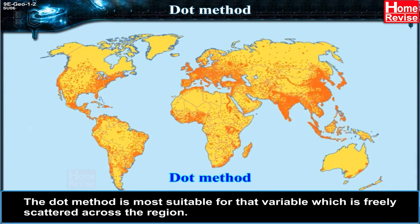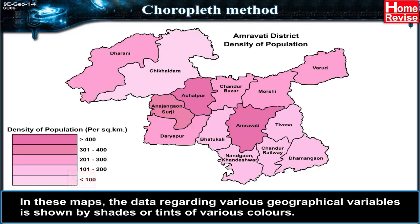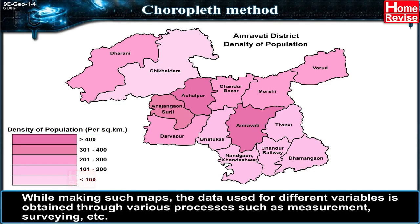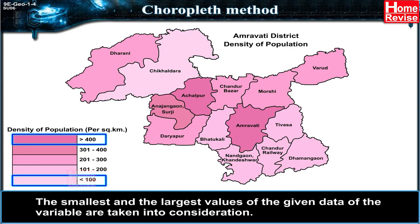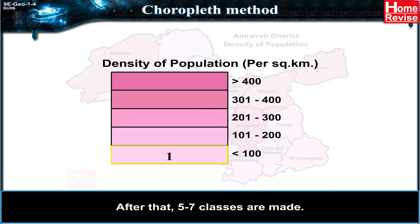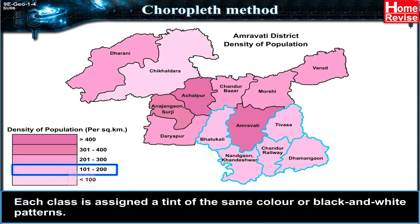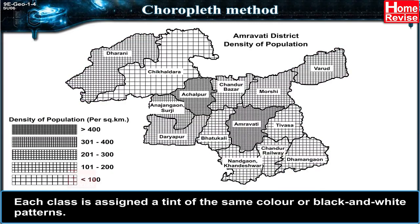Choropleth method: in these maps, data regarding various geographical variables is shown by shades or tints of various colors. The data used is obtained through various processes such as measurement and surveying. In this method, only one value is given to one sub-administrative unit. The smallest and largest values of the variable are taken into consideration, after which five to seven classes are made, each assigned a tint of the same color or black-and-white patterns.